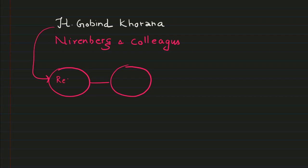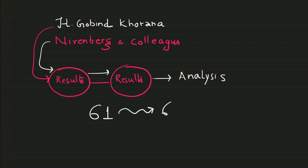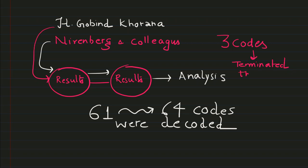Experimental results from H. Gobind Khorana's experiment and from Nirenberg and colleagues' experiments were combined and analyzed. After analysis, they decoded 61 codons out of 64, but three codons were still missing and their function was unknown. When those three codons were incorporated in the sequence, they terminated the sequence, so they were assigned as stop codons.